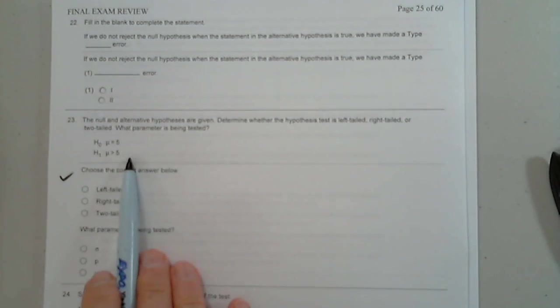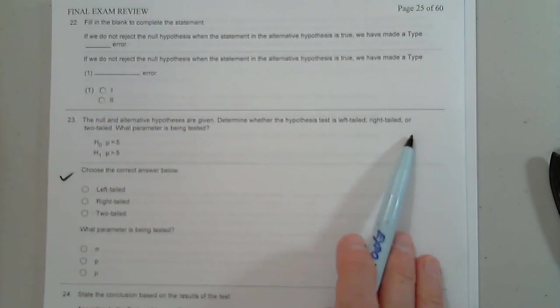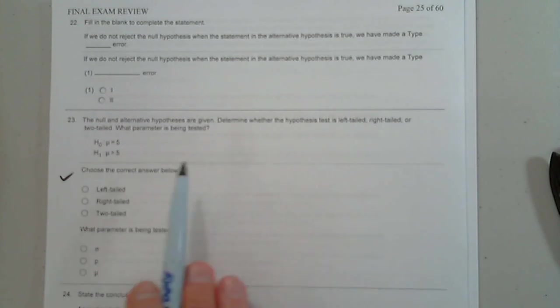The null and the alternative are given. Determine whether the hypothesis test is a left-tail test, right-tail test, or two-tail test. On 23, that would be a right-tail test. It would be a right-tail test, of course.